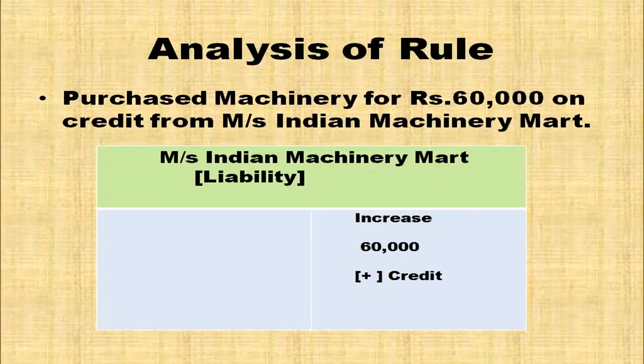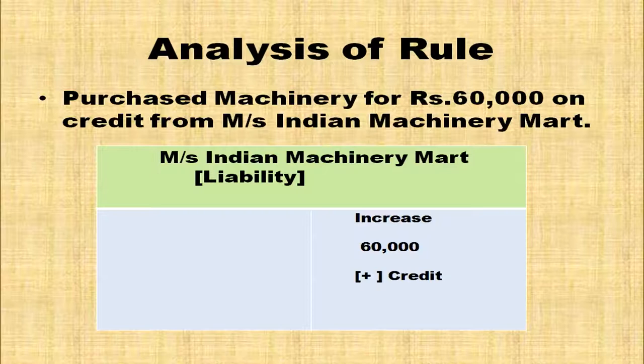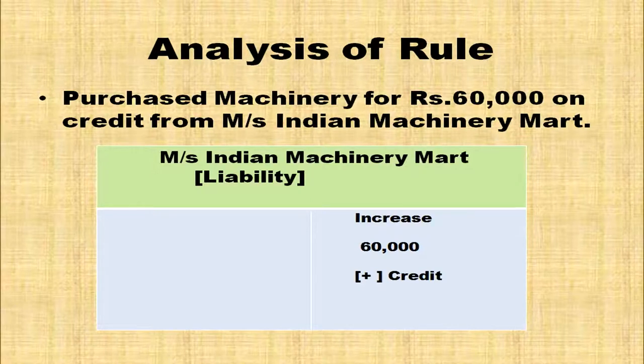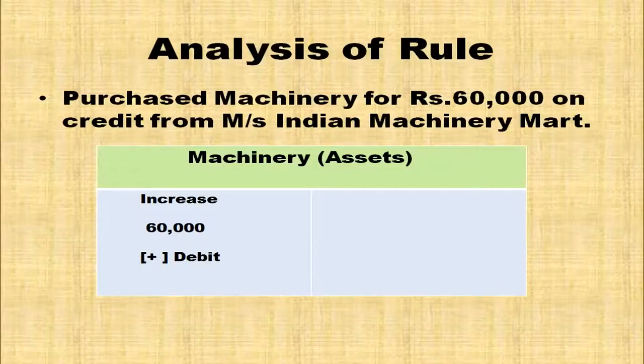Another transaction: Two affected accounts are machinery account and Messers Indian Machinery Mart. Machinery being an asset is increased, so machinery account is debited. Messers Indian Machinery Mart is a creditor — liability increases. Rule for liability: when increased, it is credited. So, Messers Indian Machinery Mart is credited. Machinery account debited and Messers Indian Machinery Mart credited with the transaction amount.